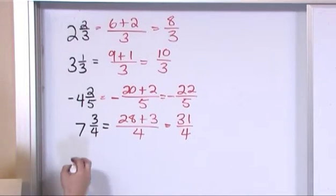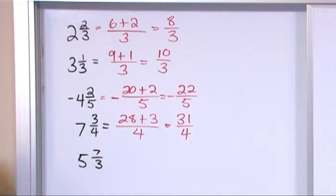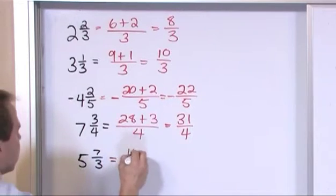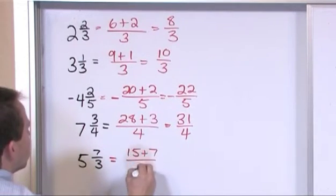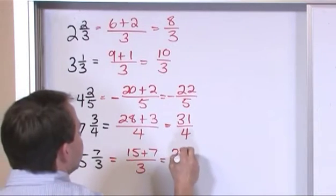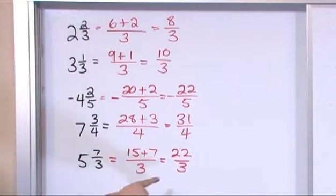What if you have five and seven-thirds? Same exact process. This is not going to change. Five times three is fifteen, plus seven, divided by three. Fifteen plus seven is twenty-two divided by three and that's the improper fraction that's totally equivalent to that fraction.